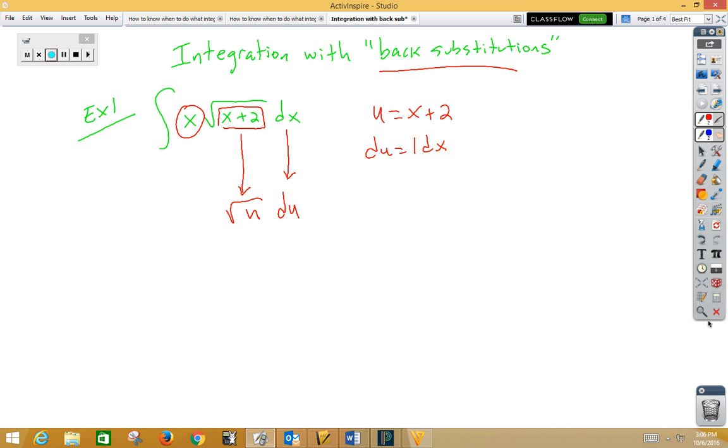So here's what we do. We're going to come back to u equals x plus 2 and we're going to subtract 2 to the other side. If we subtract 2 to the other side, those cancel and we get x is equal to u minus 2. We can now back substitute that u minus 2 in place of the x.